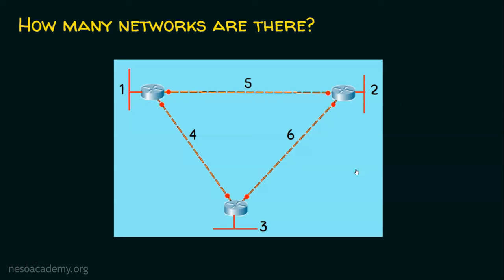To understand things better, let's take a few hosts in each network. Network 1 has 20 hosts, network 2 has 10 hosts, and network 3 has 6 hosts. So 20 IP addresses are required for network 1, 10 for network 2, and 6 for network 3. Networks 4, 5, and 6 each require 2 IP addresses — one for each router interface on either side of the link. We have a total of six networks, each with its own set of requirements.